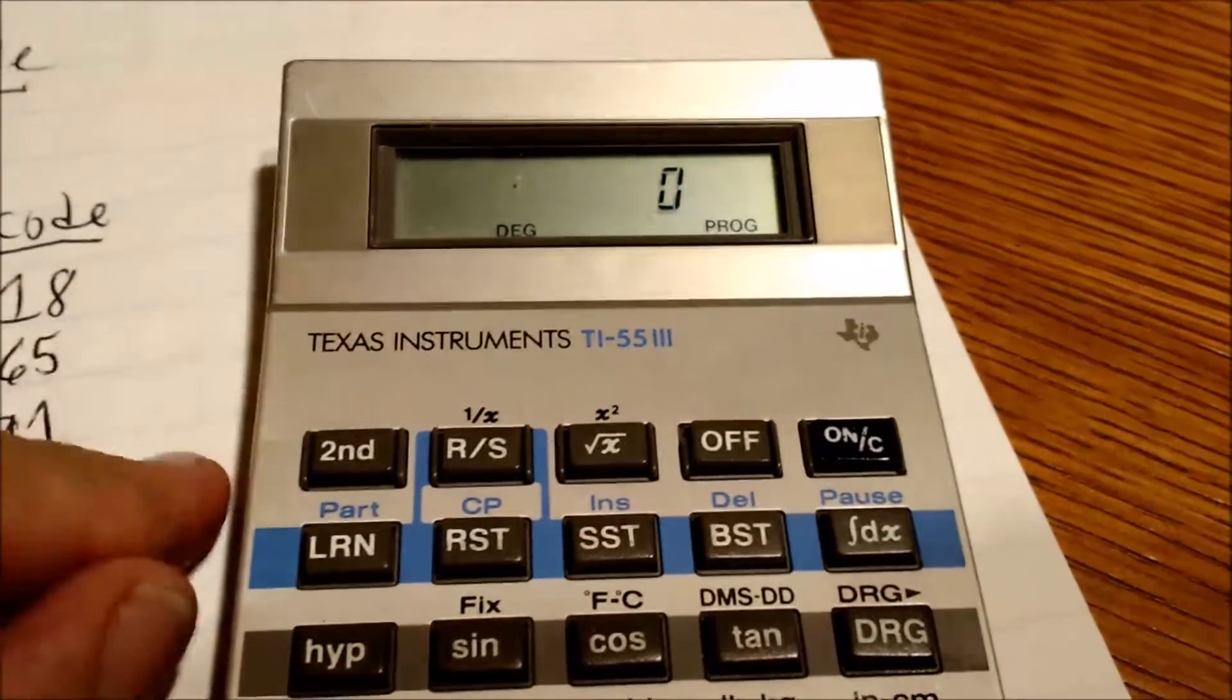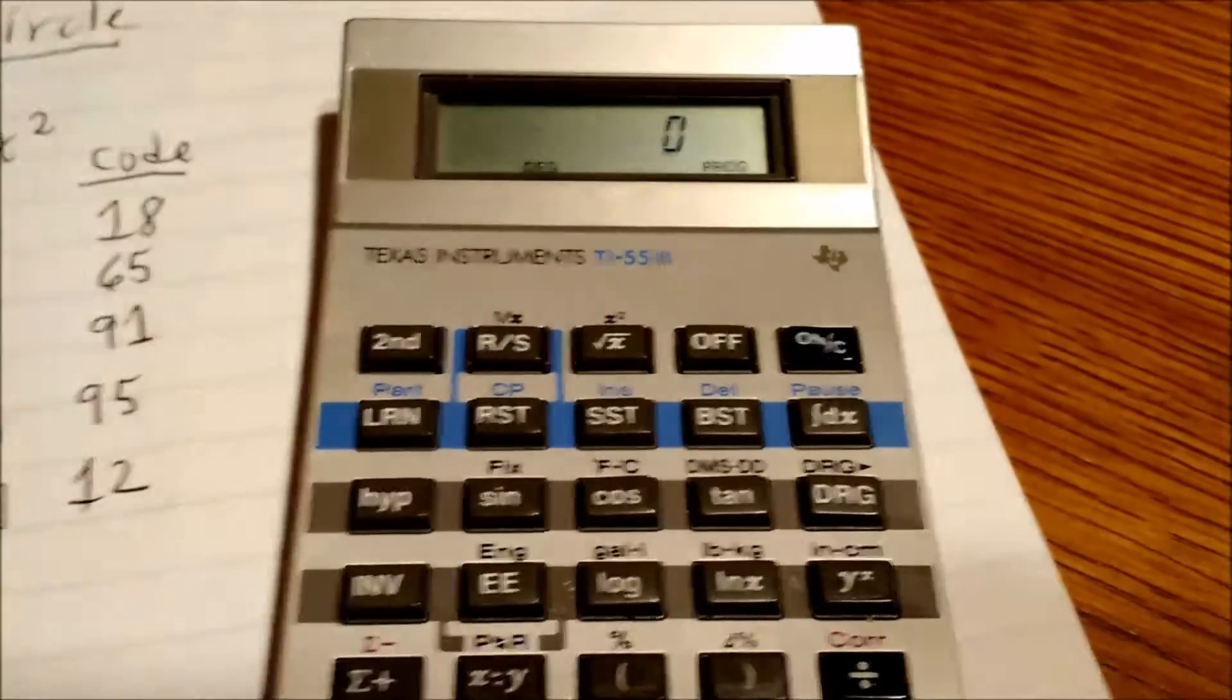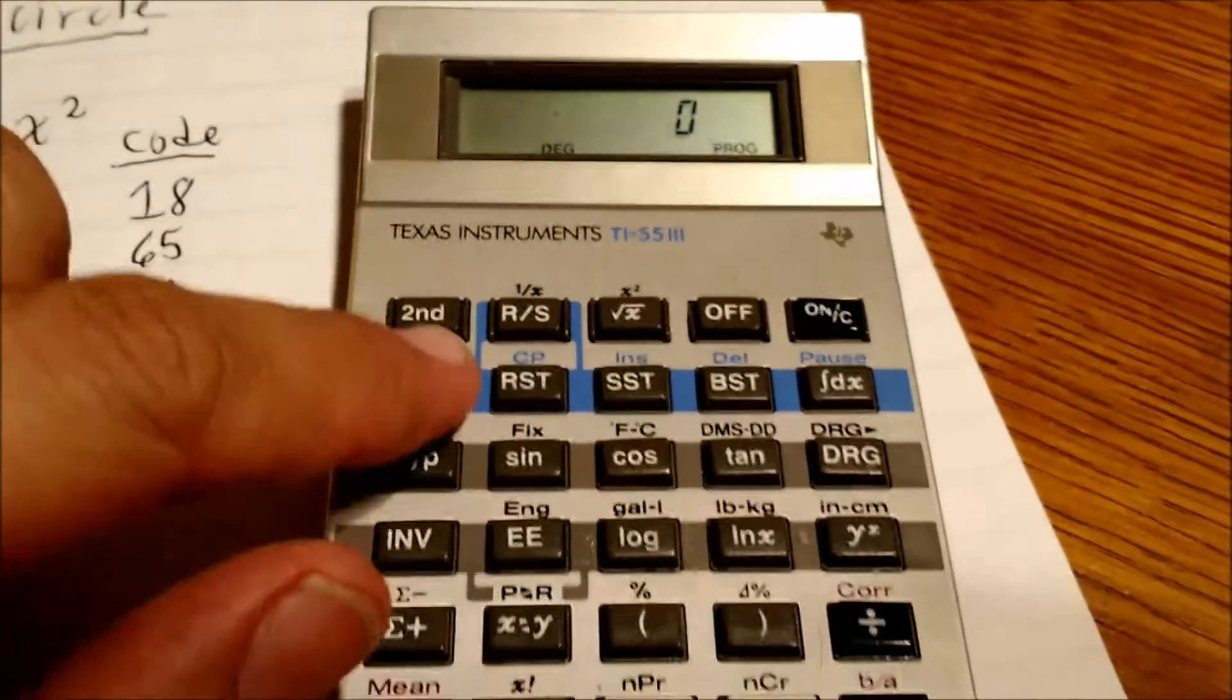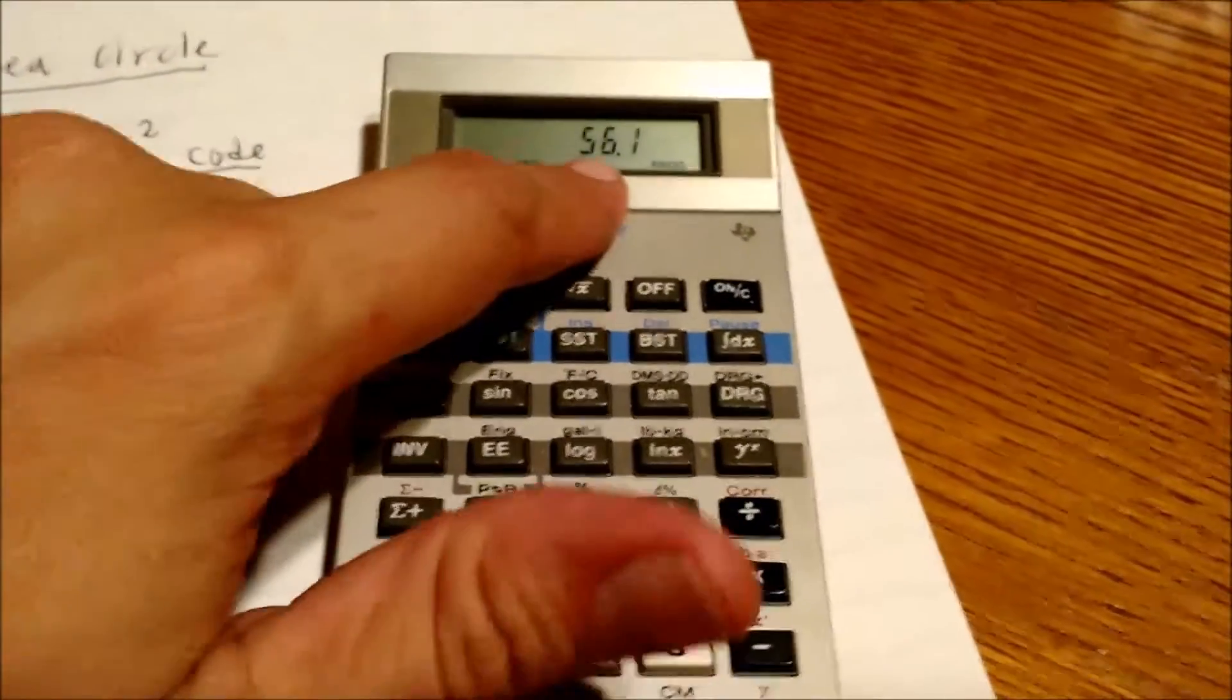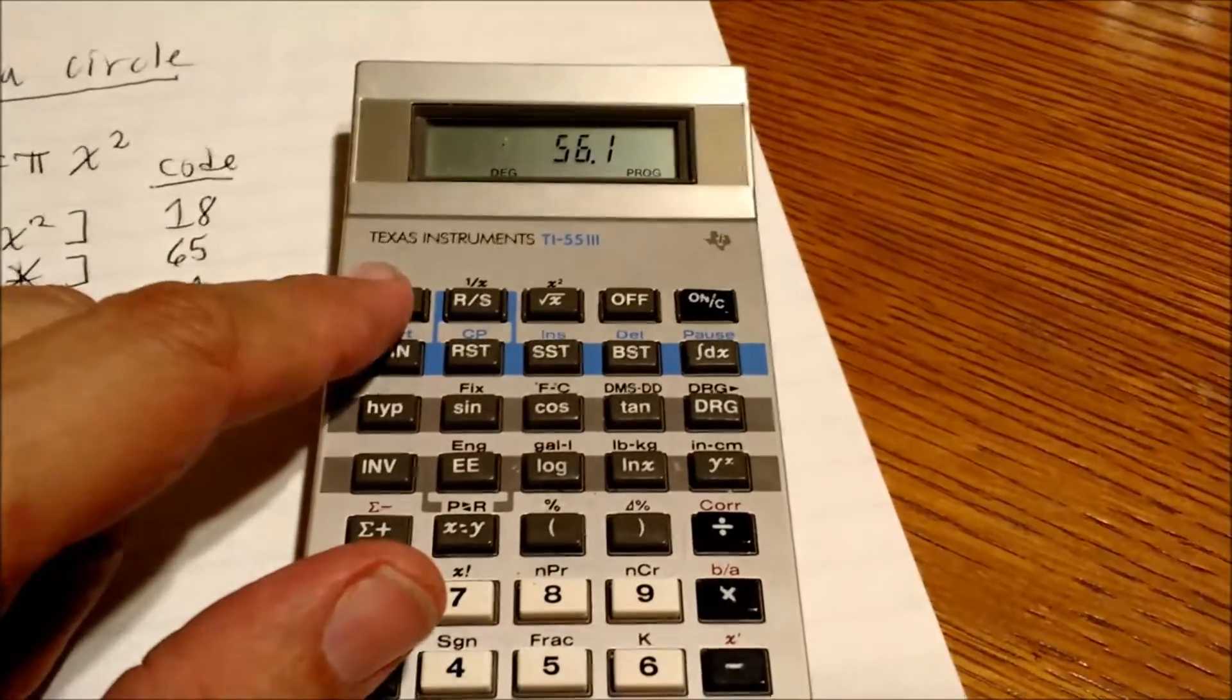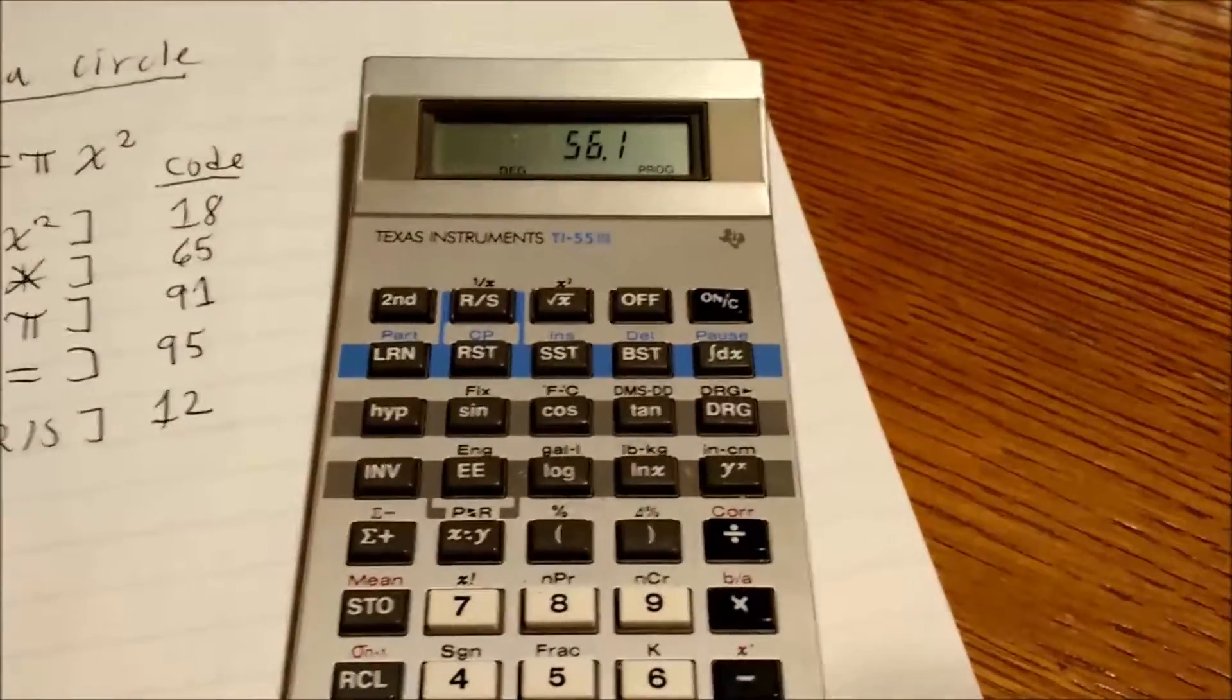To figure out how to put the TI-55-3 into programming mode, all I have to do is make a partition to allow programming steps. So, second partition, and I'm going to put one. That shows me I've got 56 steps and one memory register. As long as I've got programming steps, I can do programming, of course.